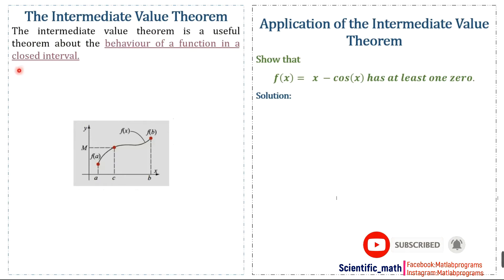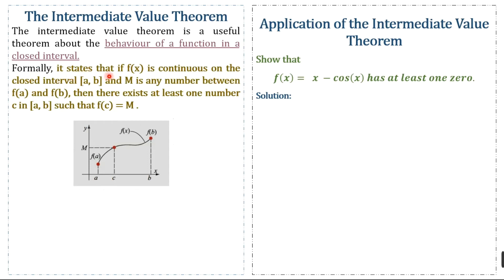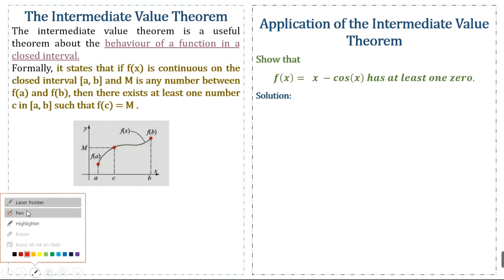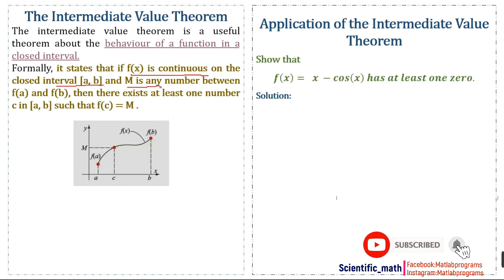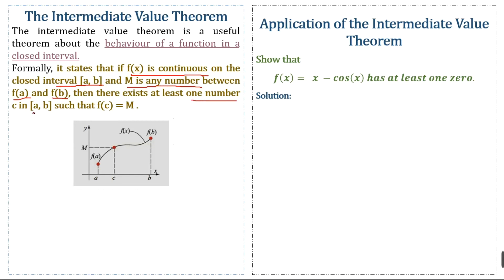The Intermediate Value Theorem is a useful theorem about the behavior of a function on a closed interval. Formally, it states that if f(x) is continuous on the closed interval [a, b], and M is any point between f(a) and f(b), then there exists at least one number c in the closed interval such that f(c) = M.